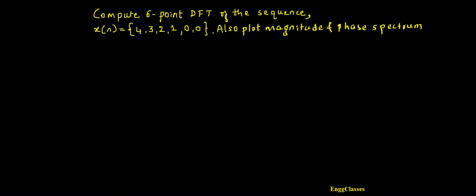Hello everyone, welcome to NG Classes YouTube channel for a video lecture series in digital signal processing. In this video lecture we shall consider a numerical: compute the 6-point DFT of the given sequence x of n which is equal to 4, 3, 2, 1, 0, 0, and also plot the magnitude and phase spectrum.